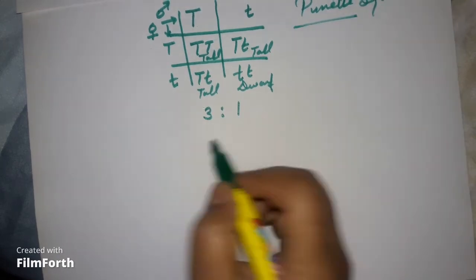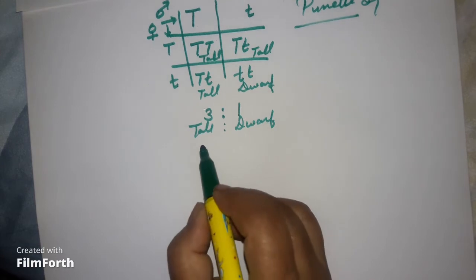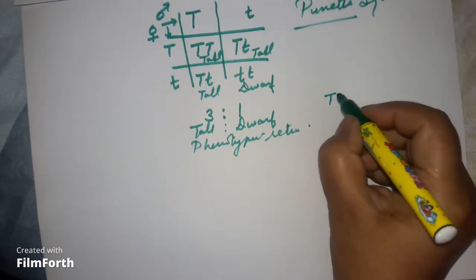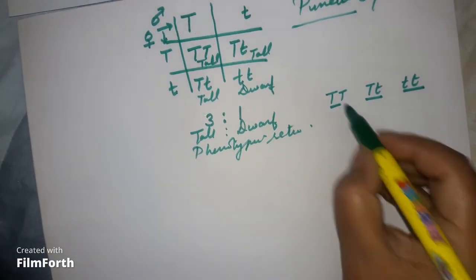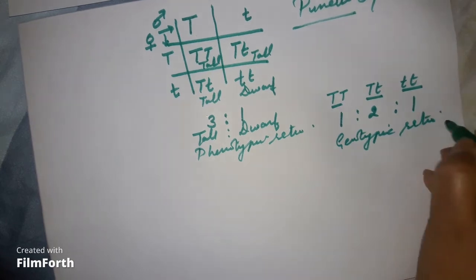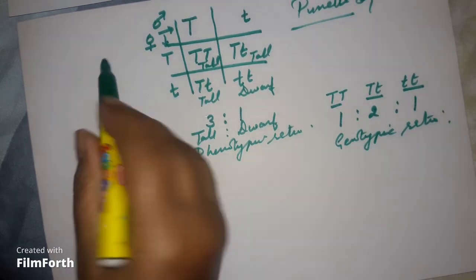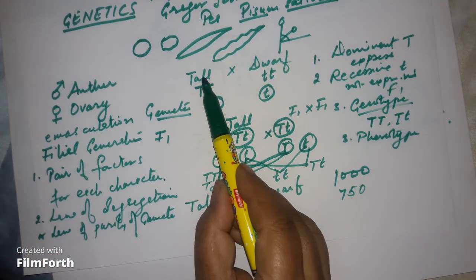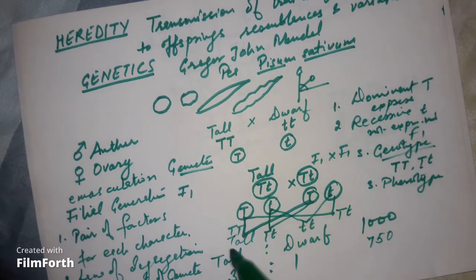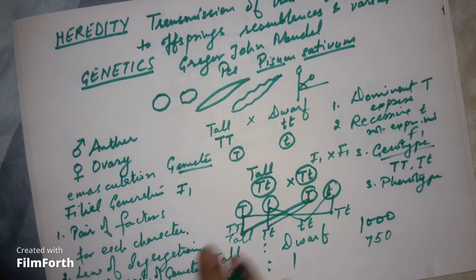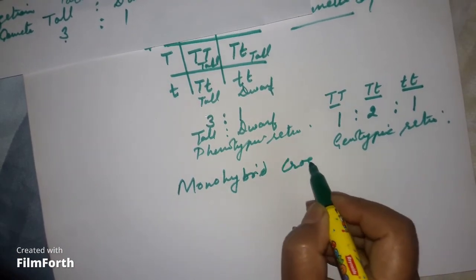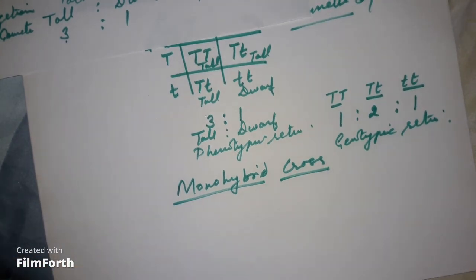The phenotypic ratio is 3 tall to 1 dwarf, while the genotypic ratio is 1 TT : 2 Tt : 1 tt, which is 1:2:1. Since we studied only one character — height — this type of cross is called a monohybrid cross. In the next video we'll discuss the dihybrid cross.